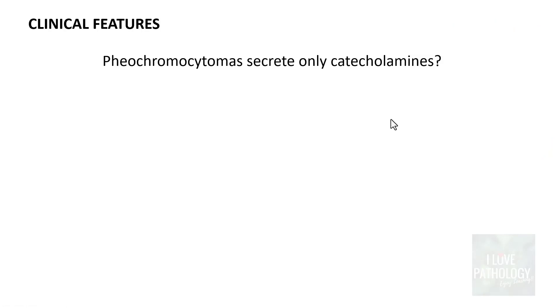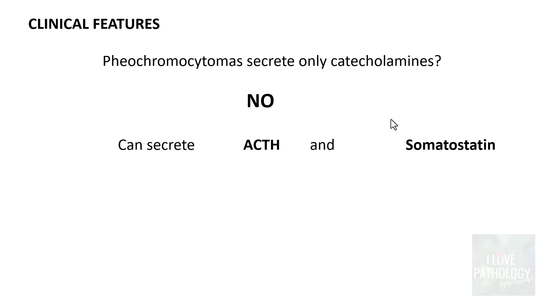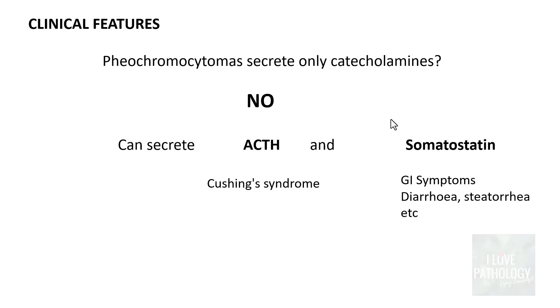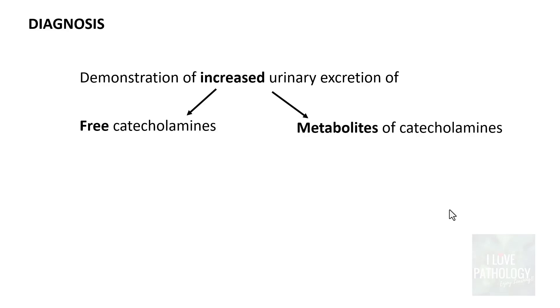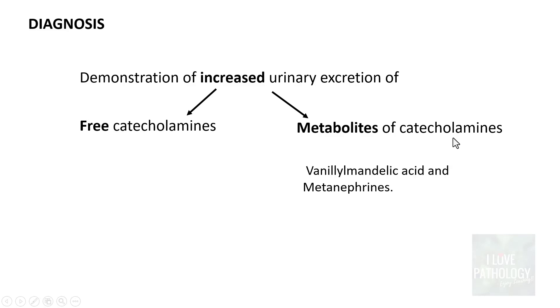Pheochromocytoma can also secrete ACTH and somatostatin. ACTH secretion causes symptoms mimicking Cushing's syndrome; somatostatin secretion causes gastrointestinal symptoms like diarrhea and steatorrhea. Diagnosis is made by demonstrating increased urinary excretion of free catecholamines — epinephrine, norepinephrine — or their metabolites, specifically vanillylmandelic acid (VMA) and metanephrines.